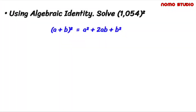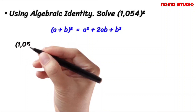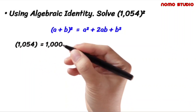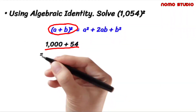What should we do to the quantity 1054 squared to become in the form of the quantity (a + b) squared? Notice that 1054 is the same as 1000 plus 54. To make this 1000 plus 54 look like that form, all we have to do is to square this.